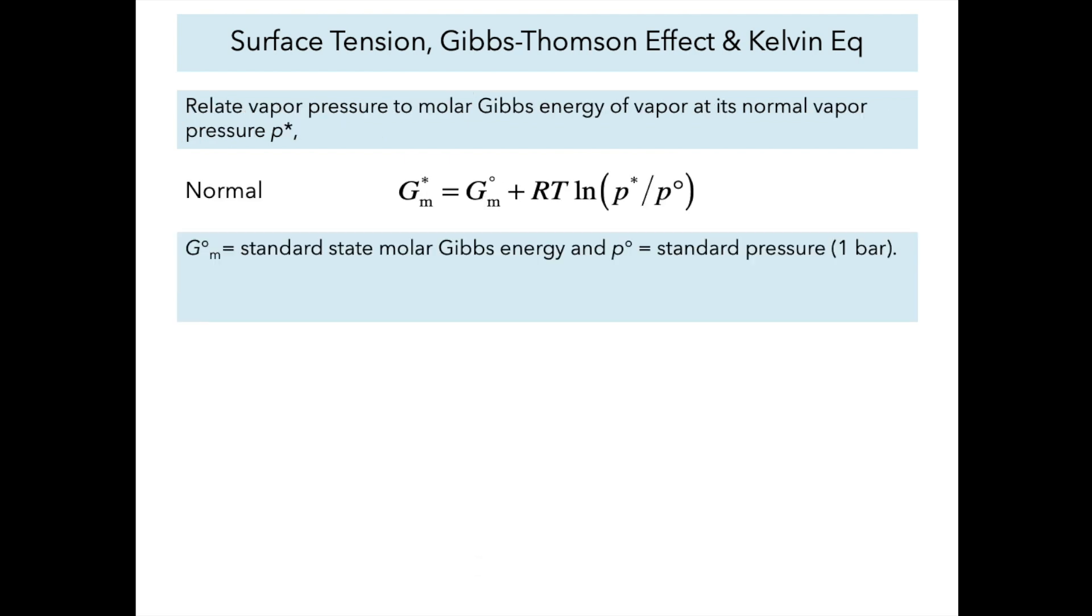Let's relate the vapor pressure to the molar Gibbs energy of that vapor at normal conditions. We'll use the star to indicate a normal pure substance. GM star is the molar Gibbs energy of our vapor, equal to the standard state molar Gibbs energy G naught plus a correction factor RT ln(p*/p°), where p° is the standard pressure of one bar.